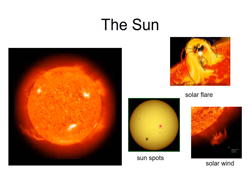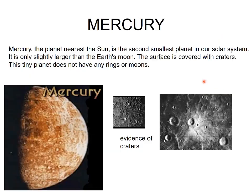If you observe the Sun through a telescope, you can find spots on the Sun. Mercury is the planet nearest to the Sun and is the second smallest planet in our solar system — only slightly larger than Earth's Moon. The surface is covered with craters, and Mercury does not have any ring or moon.